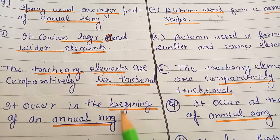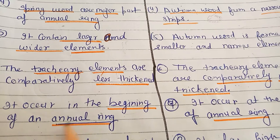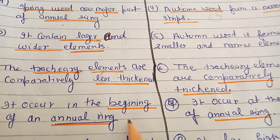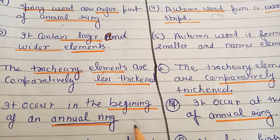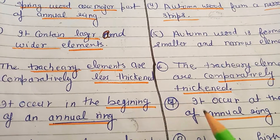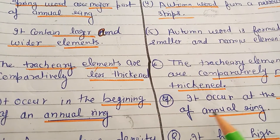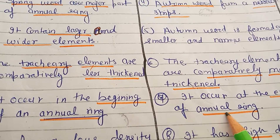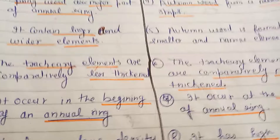Spring wood occurs at the beginning of the annual ring, while autumn wood is formed at the ending of the annual ring.